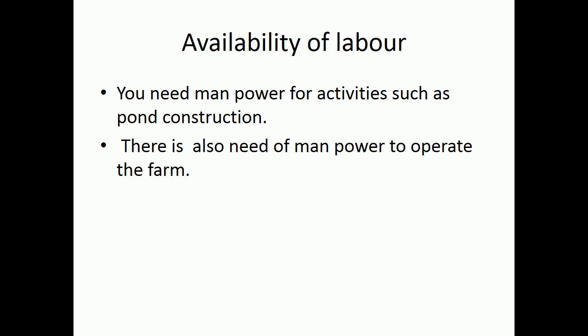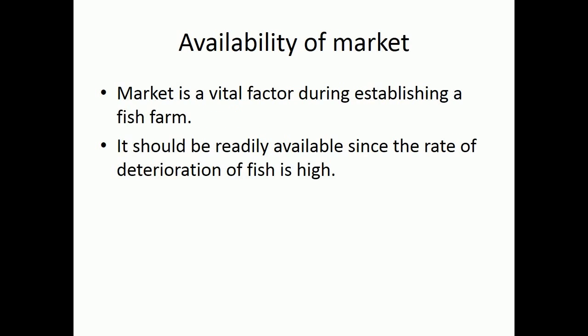Availability of labor: you need manpower for activities such as pond construction, and there is also a need for manpower to operate the farm. Availability of market: market is a vital factor when establishing a fish farm. It should be readily available since the rate of deterioration of fish is high.